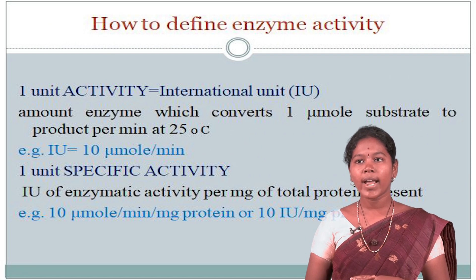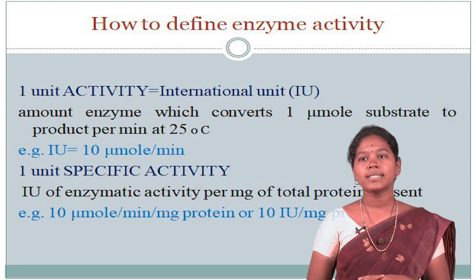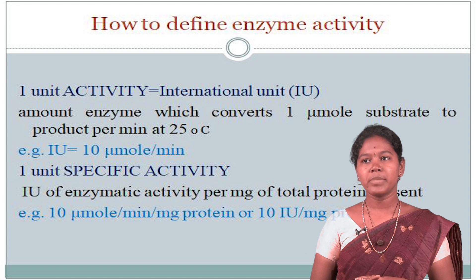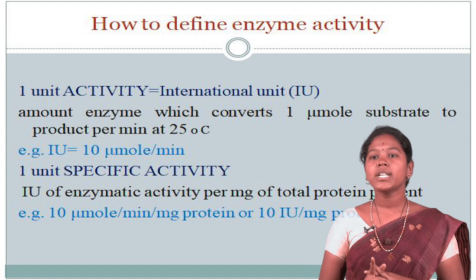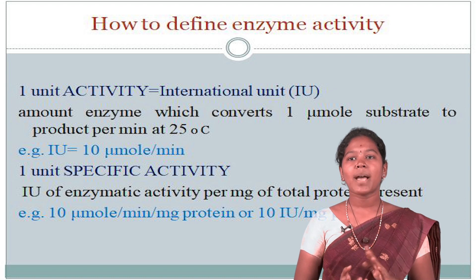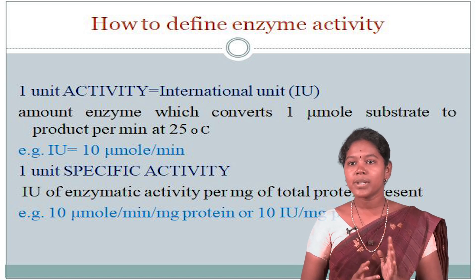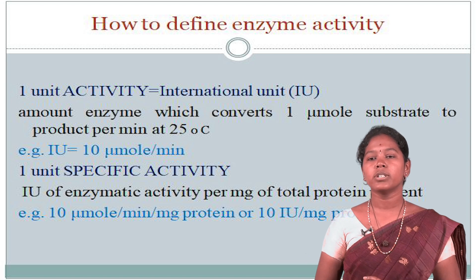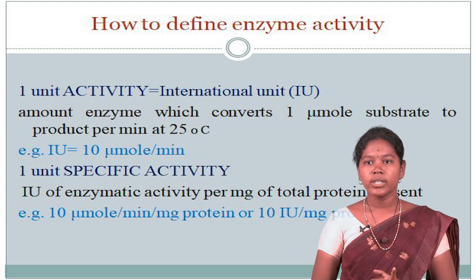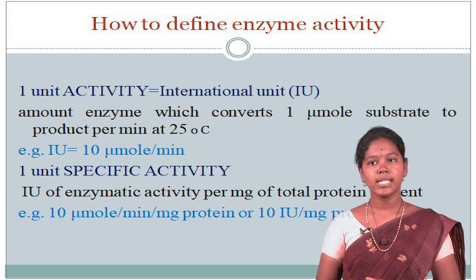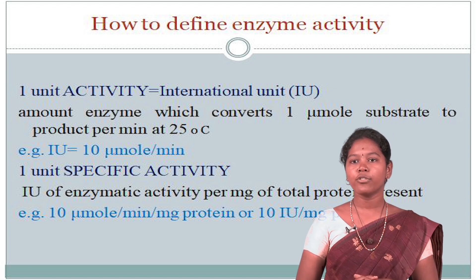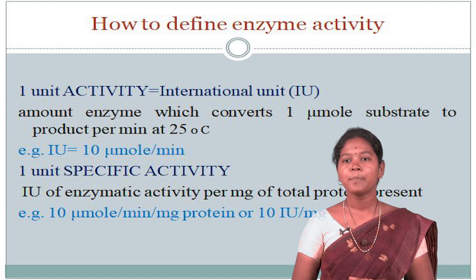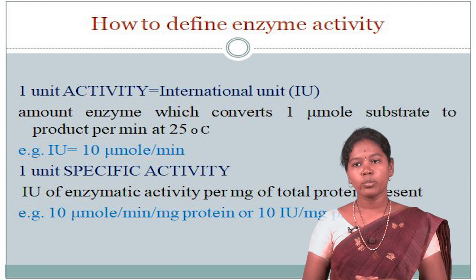How do we define enzyme activity? The physical property of an enzyme is most often measured by the relative rate at which the substrate is converted to product. One unit of activity represents the international unit, known as the IU. One unit of activity means the amount of enzyme which converts one micromole of substrate to product per minute at 25 degrees Celsius. Example: 1 IU equals 10 micromoles per minute.